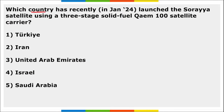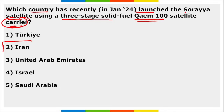Iran recently launched the Soraya satellite using a three-stage solid-fuel QAM-100 satellite carrier rocket.